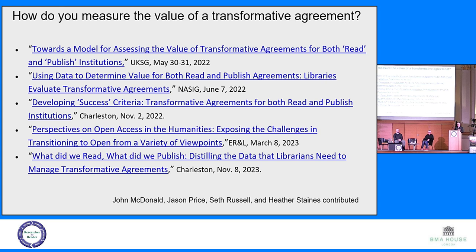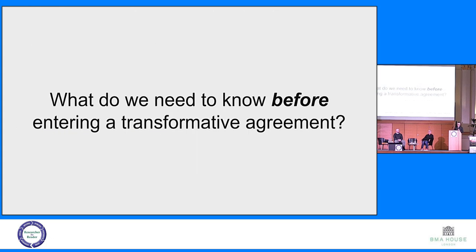Today I'm going to take a step back and talk about the underlying data and some of the challenges we've faced in gathering data that can help answer a really crucial question: what do you need to know before you enter a transformative agreement? What is the baseline information you have to have in order to decide whether a transformative agreement or a read-and-publish deal makes sense for your institution?